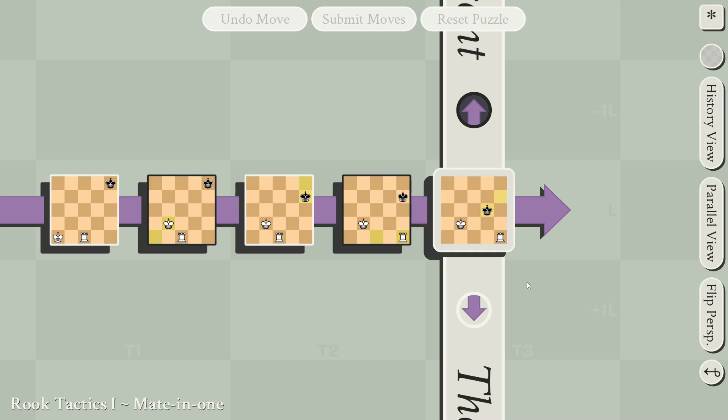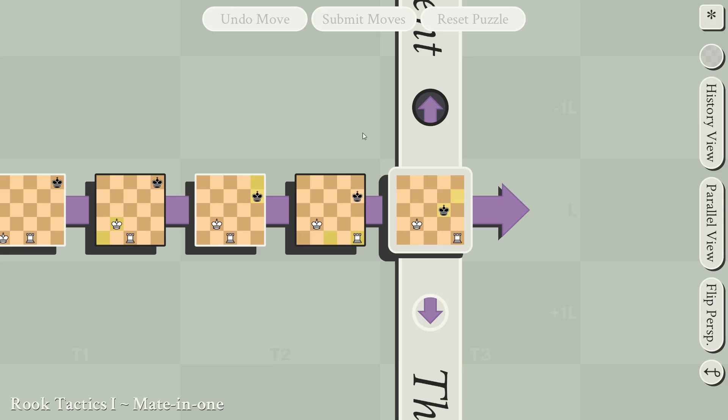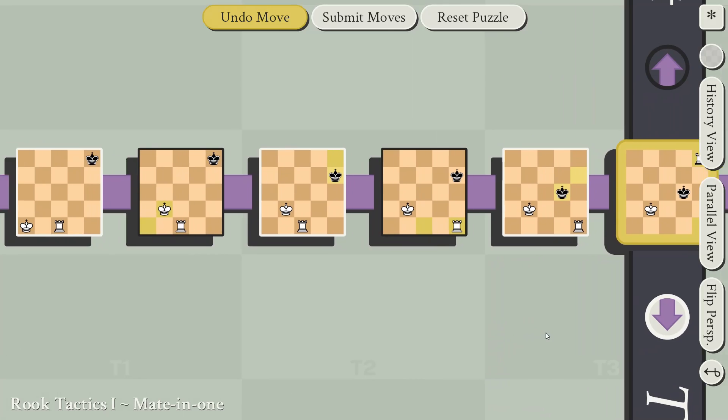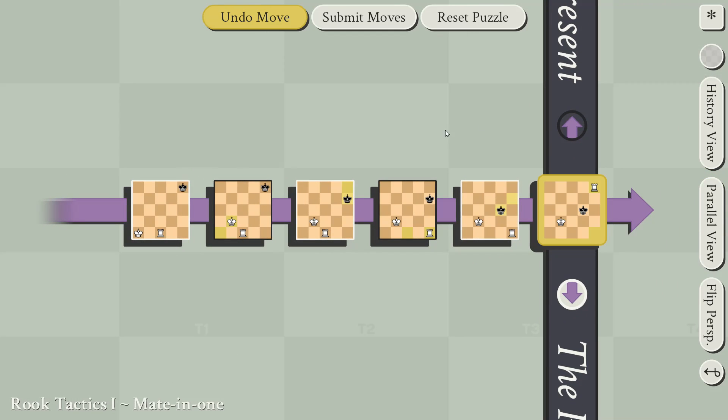Remember that a rook moves any amount in a single direction. Now notice that there's a king in the top right on this board in the past. If I move this rook up into the corner, then on my next turn, I can move back in time and capture the king. So I'm going to submit my move.